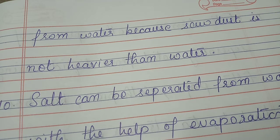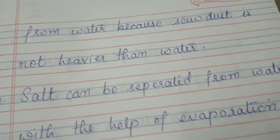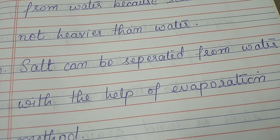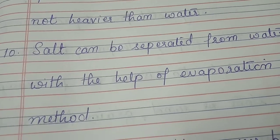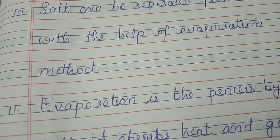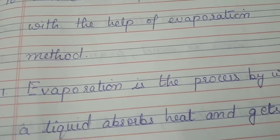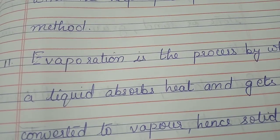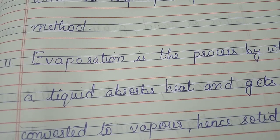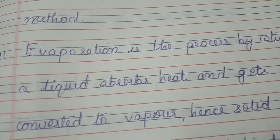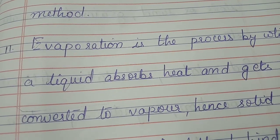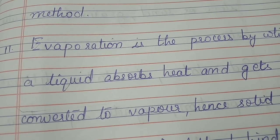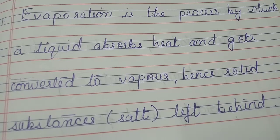Salt can be separated from water with the help of evaporation. Evaporation is the process by which a liquid absorbs heat and gets converted to vapor, and the solid substance such as salt is left behind.